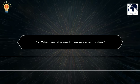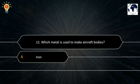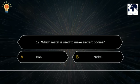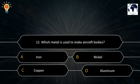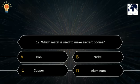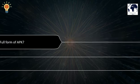Question number 12. Which metal is used to make aircraft bodies? A. Iron. B. Nickel. C. Copper. D. Aluminium. The correct answer is D. Aluminium.